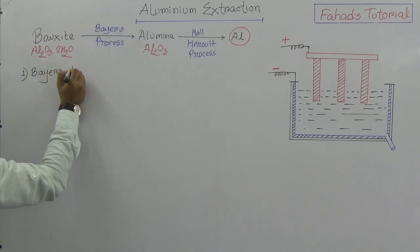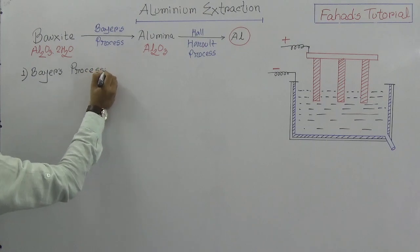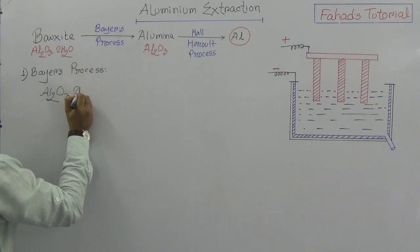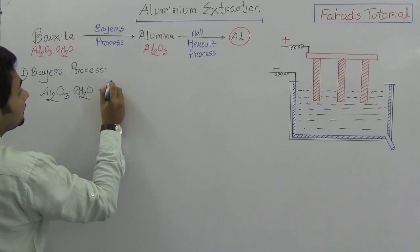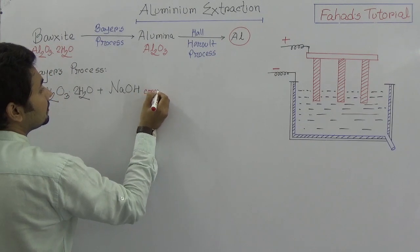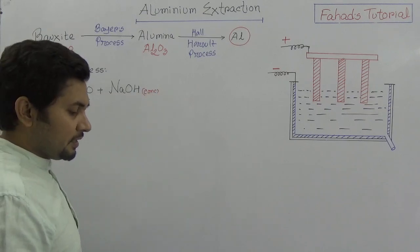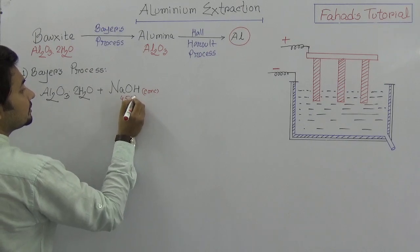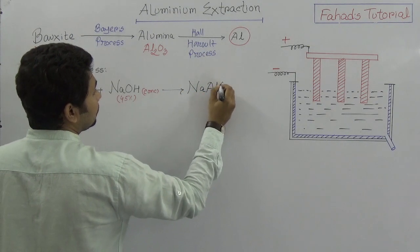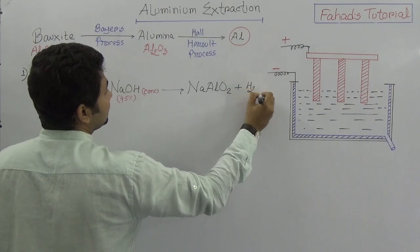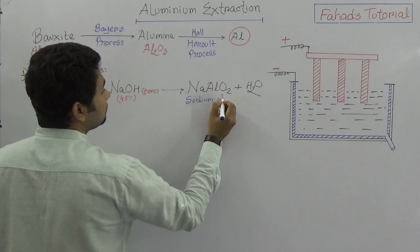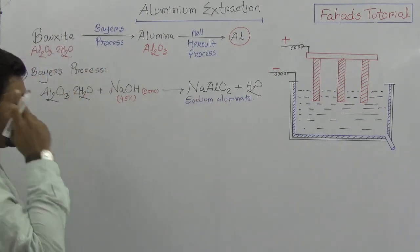In the Bayer's process, the bauxite — that is aluminium oxide — undergoes a reaction with concentrated sodium hydroxide, approximately 45% concentration. This reaction produces sodium aluminate (NaAlO₂) and water.